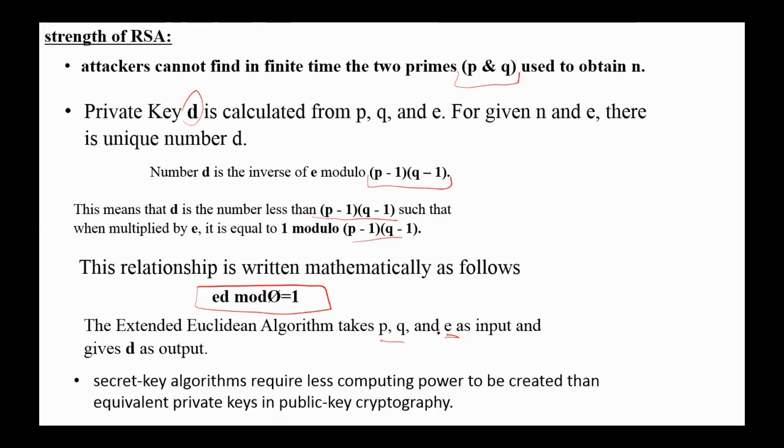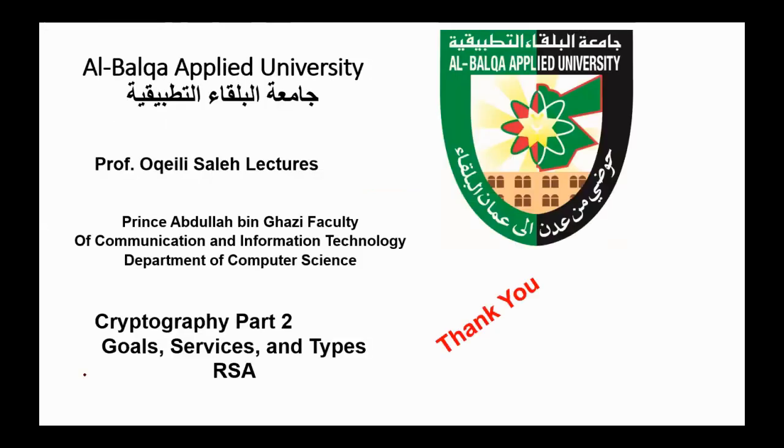Secret key algorithms require less computing power to be created than equivalent private keys in public key cryptography. RSA is used in many commercial applications with 1024 bits and more. There is another public-private key cryptosystem called ECC, which uses elliptical function to generate the public and private keys, and I will publish one video on the ECC cryptosystem.